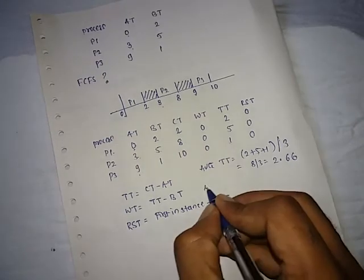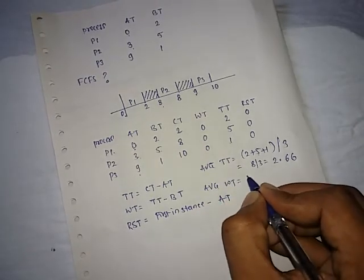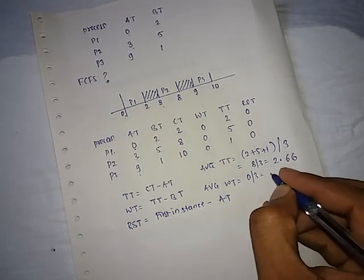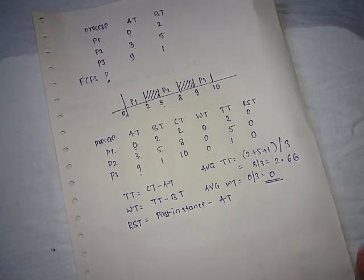And last one is average waiting time, which completes your question. It's 0, 0 divided by 3, the answer is 0.